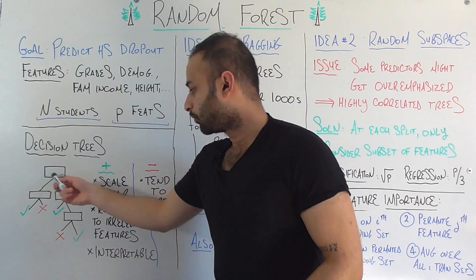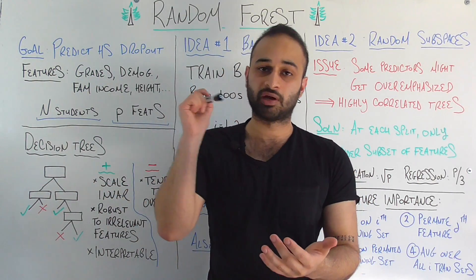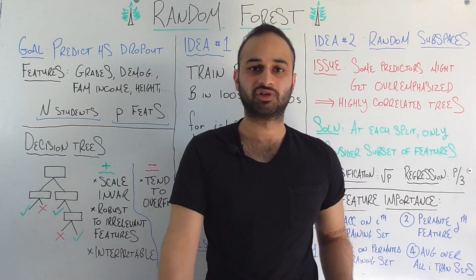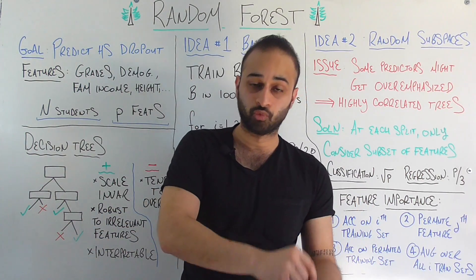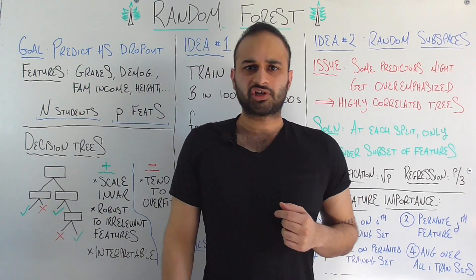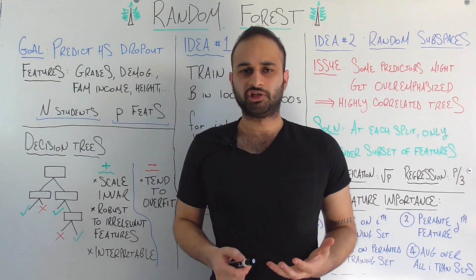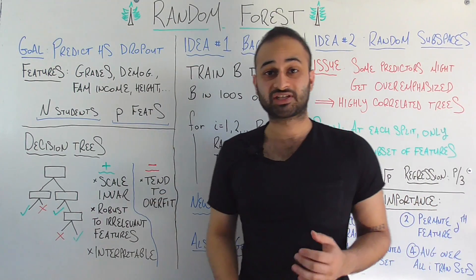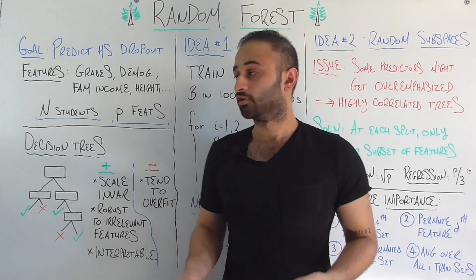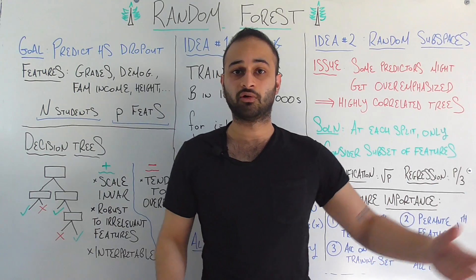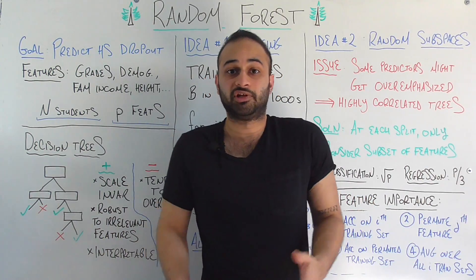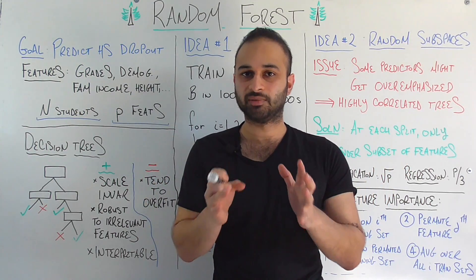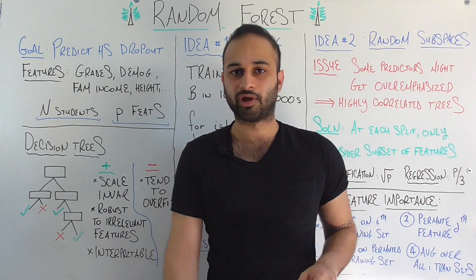We work our way down like that — the next level picks which feature is most helpful, and so on, until we get to the leaves of the decision tree, at which point we're ready to say yes the student will drop out or no the student will not drop out. Now let's talk about some of the pros of decision trees. One of the big ones is that they're scale invariant. What that means is that it doesn't matter if your features are in meters or feet or degrees Fahrenheit or Celsius — it really doesn't matter at all.